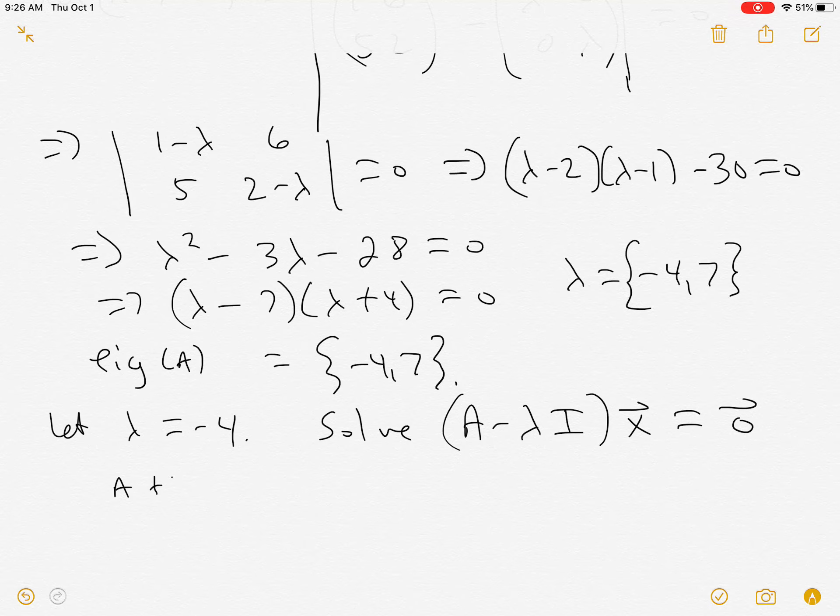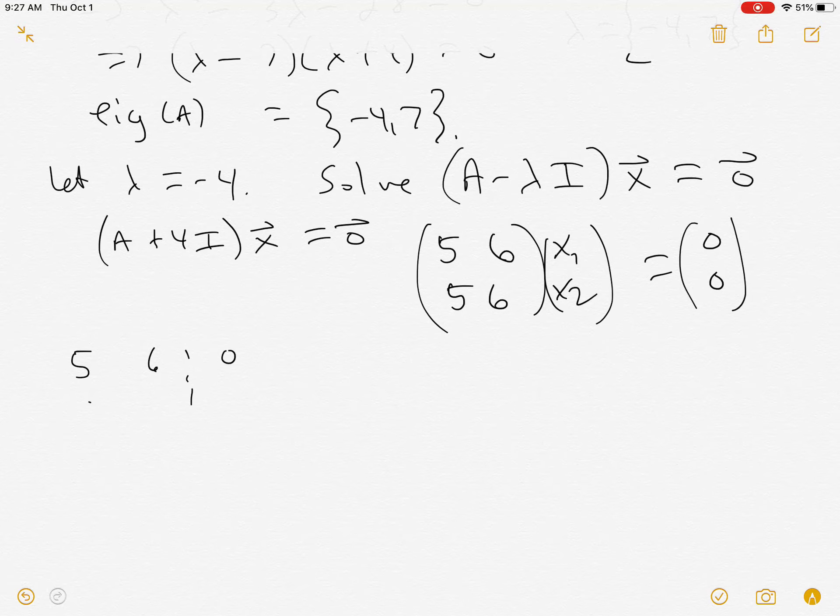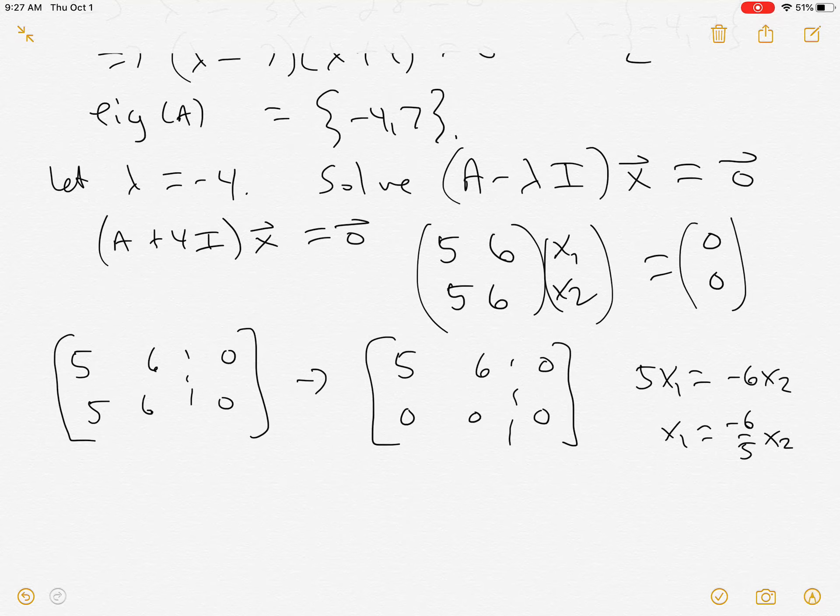In this case, it's A - (-4), so plus 4I, x = 0. This is what we're solving. And when you do that, you get (5, 6, 5, 6) times (x1, x2) = (0, 0). So now we're solving the augmented matrix. So you kill row 2. You see there's one free variable, which I'm going to use as x2. And so this says 5x1 = -6x2, so x1 is -6/5 x2.